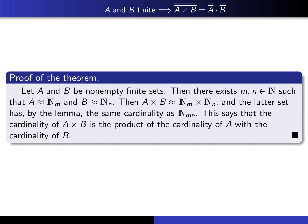Now it's easy to complete the proof of the theorem. If A and B are any two non-empty finite sets, then there must exist natural numbers m and n such that A has the same cardinality as Nₘ and B has the same cardinality as Nₙ. Then — by an exercise we did earlier — the corresponding Cartesian products have the same cardinality. We know that Nₘ × Nₙ has the same cardinality as Nₘₙ, which we just proved. Therefore, the cardinality of A × B is m times n, which is the product of the cardinality of A with the cardinality of B, and that completes the proof.